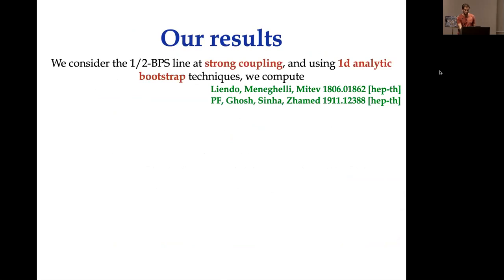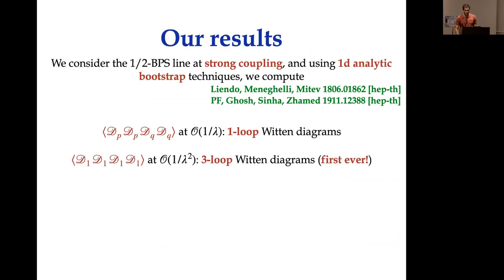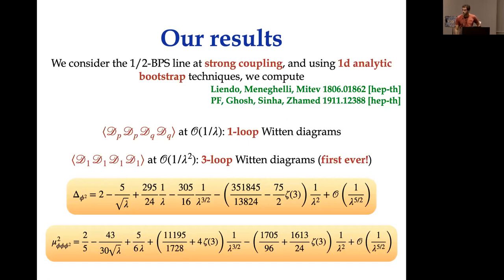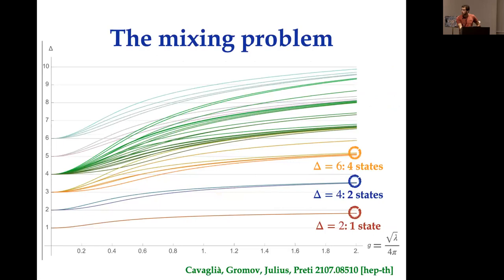Our recent results consider the half-BPS Wilson line at strong coupling using 1D analytic bootstrap techniques. We computed correlators of pairwise-equal half-BPS operators at order 1/sqrt(lambda) — one loop — and, most importantly, the correlator of four displacement operators at three loops, order 1/lambda squared. We also computed analytically the first four corrections to the dimension of phi-squared and the correction to its OPE coefficient.